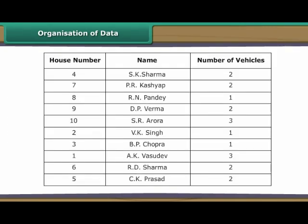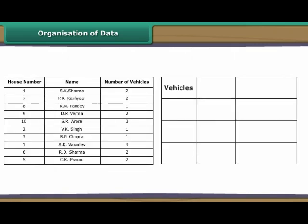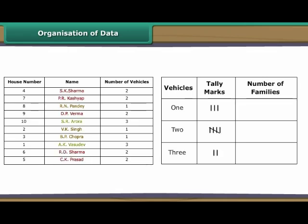Let us now organize the RWA data. Make three columns: vehicles, tally marks and number of families. Specify one, two and three under vehicles one by one. Under tally marks, denote families with a specific number of vehicles by tally marks against appropriate options of vehicles. Now count the tally marks against every option of vehicles and record it under number of families.